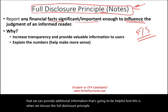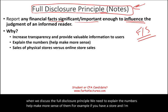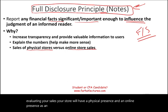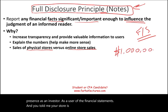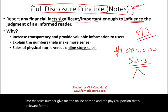We need to explain the numbers and help make more sense of them. For example, if you have a store and I'm evaluating your sales, your store will have a physical presence and an online presence. As an investor, as a user of the financial statements, you told me your store made a million dollars in sales — that's good. But give me the online portion and the physical portion separately. That's relevant for me. This is what full disclosure is: give me additional information to help me make a better decision.